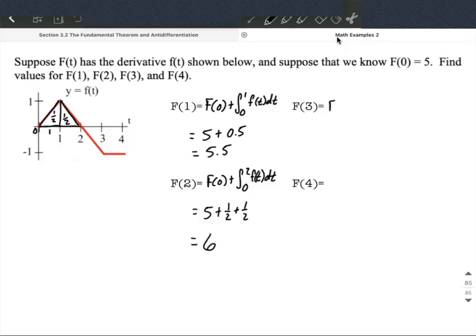For F(3), we have F(0) plus the integral from 0 to 3 of f(t)dt. F(0) is 5, but what about the change from 0 to 3? We already calculated 0 to 2 as 1. Going to 3 includes this other triangle down here.